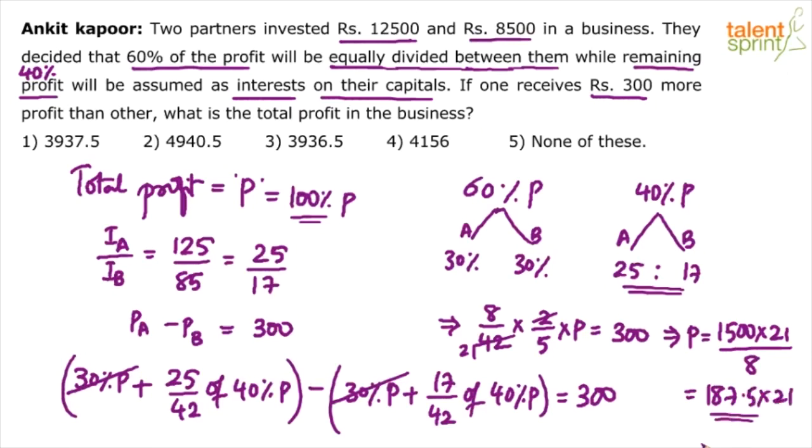So, 180 into 21, 7.5 into 21 - do that calculation. You will get 3937.5. The answer will not be an integer value, that's for sure. Will it be like 5000? Close to 5000? No. Anyway, none of these is there, so we have to do proper calculation and I'm sure you will get 3937.5 as the answer.